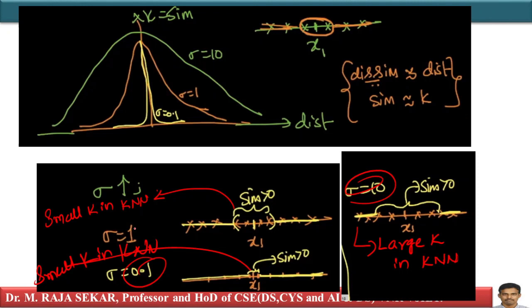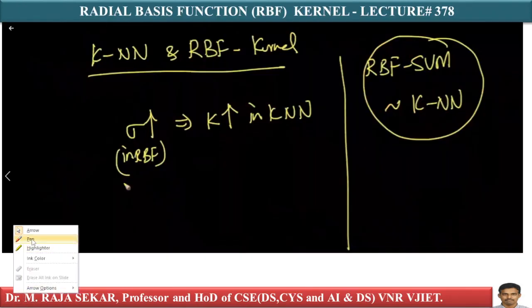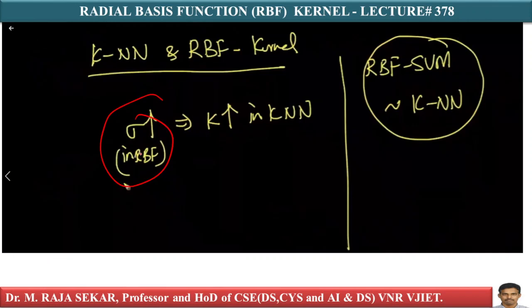As sigma increases in RBF kernel you can accommodate more number of points — just as increasing k in KNN lets you take more neighbors. Sigma in RBF kernel is similar to k in KNN. As sigma increases you accommodate more points; as sigma decreases you accommodate fewer points. Intuitively, RBF-SVM is similar to KNN: sigma in RBF is similar to k in KNN.